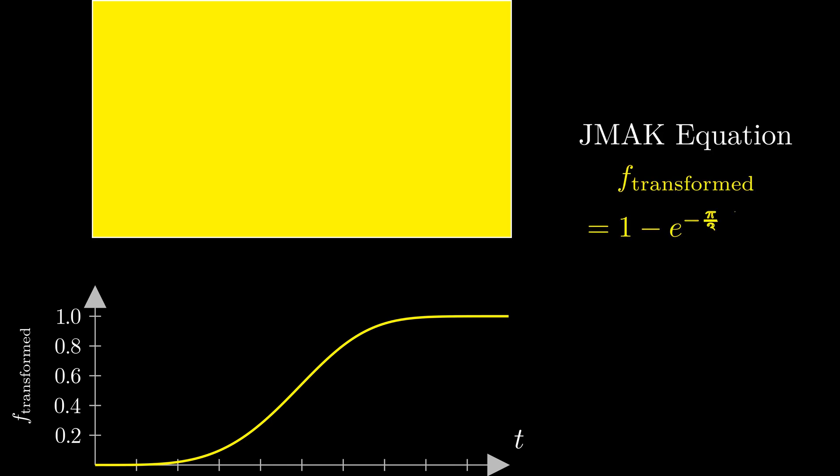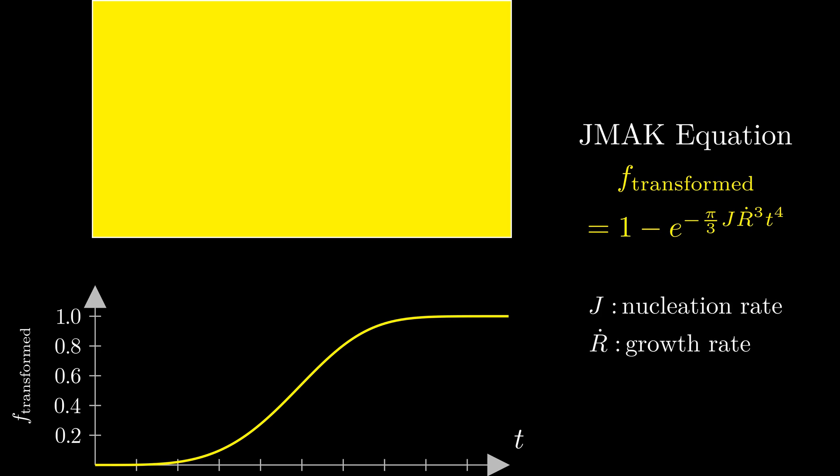The JMAC equation states that the phase fraction transformed is equal to 1 minus e to the power of minus pi over 3, times j times r-dot cubed times t to the power of 4, with j being the nucleation rate and r-dot being the growth rate. This JMAC equation is what we want to derive with the time cone method at the end of this video.